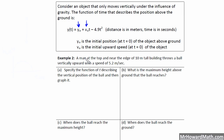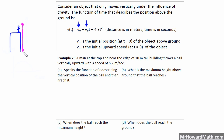Let's look at an actual application. Example two: a man at the top and near the edge of a 10 meter tall building throws a ball vertically upward with a speed of 5.2 meters per second. We've got a building here, 10 meters tall, and a man throwing an object. He throws it straight up, and then it falls back down to the ground — that's the path this object is taking. Gravity acts on it and it comes straight back down.